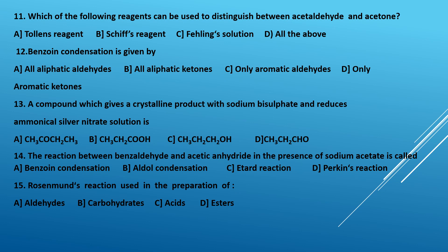Fifteenth question: Rosenmund's reaction is used in the preparation of — A, aldehydes; B, carbohydrates; C, acids; D, esters. Rosenmund's reaction is learned in the synthesis of aldehydes, so the correct answer is A, aldehydes.